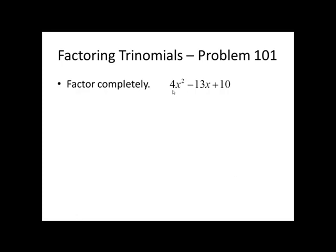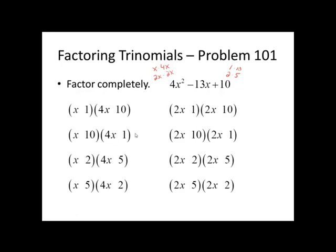Here we have a trinomial that has a leading coefficient of 4. I cannot factor 4 out of these three terms, so this is one of the ones that we've done in my class by trial and error. I take a look at the first term, 4x², and I know that that's either going to be x times 4x or 2x times 2x. I look at the last term, 10, and I know that's either going to be 1 times 10 or 2 times 5. Now I'm going to mix and match each pair for 4x² with each pair for 10 until I run into the right factor. Here's x and 4x with 1 and 10 in both orders and with 2 and 5 in both orders. Here's 2x and 2x with 1 and 10 and 2 and 5.